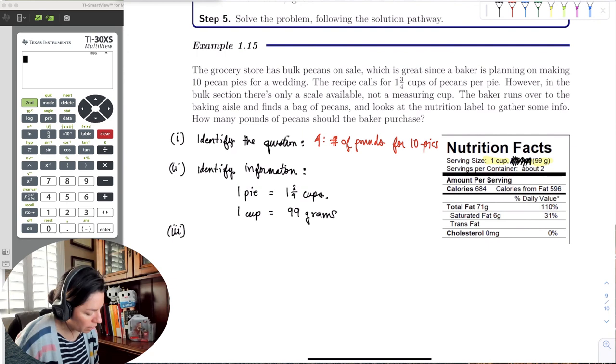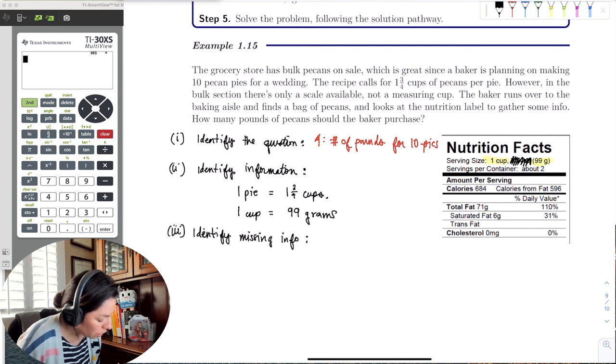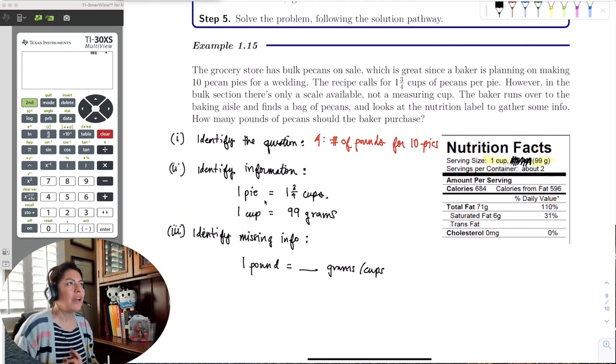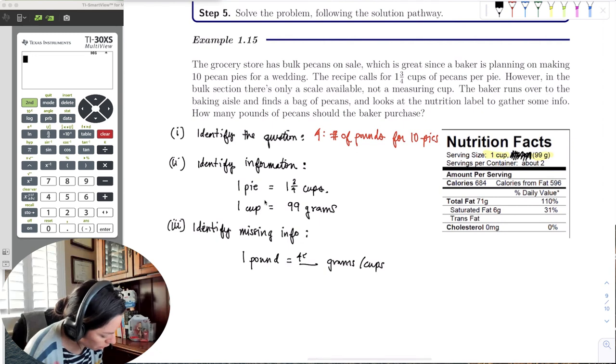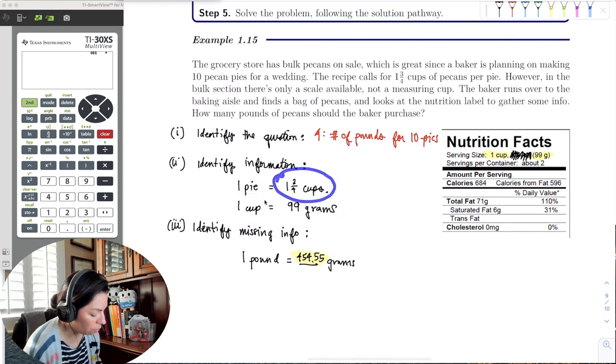So to identify the information, all we know is that one pie needs 1 and 3/4 cups of pecans. The other piece I know is that one cup of pecans is equal to 99 grams. And the other part is that we know we need 10 pies. The third part says now identify any missing information.